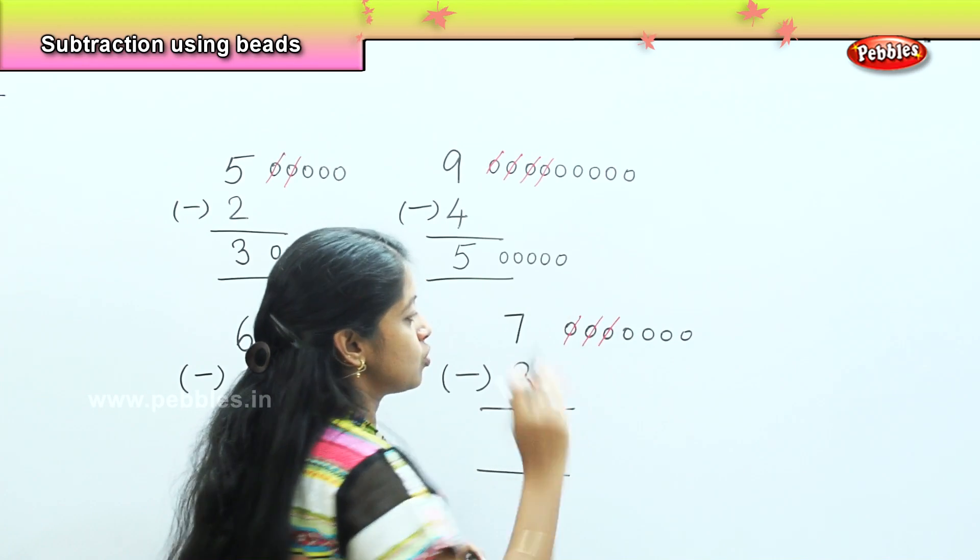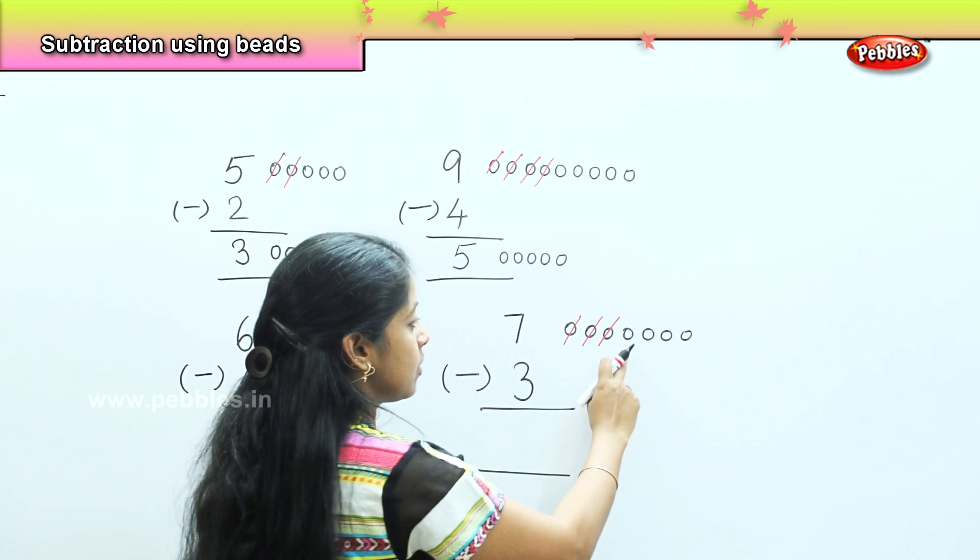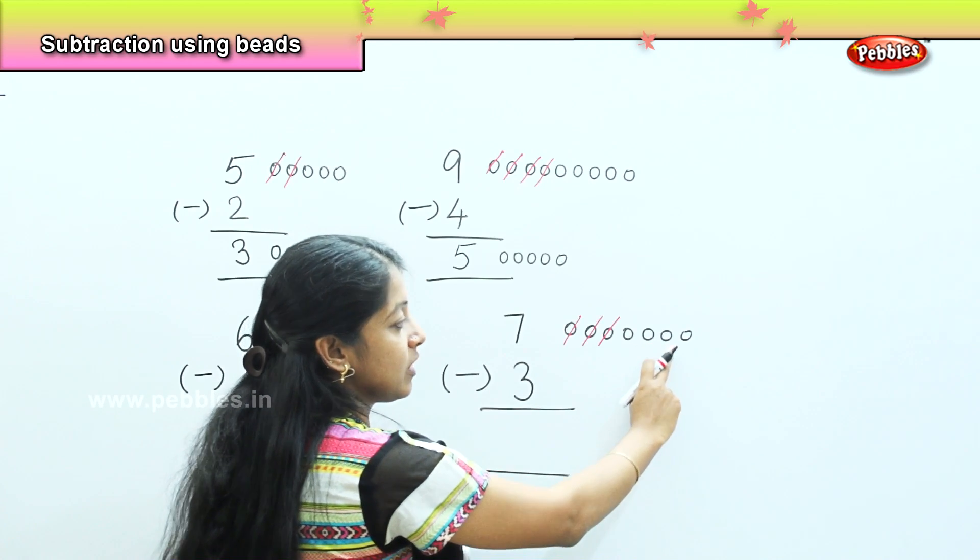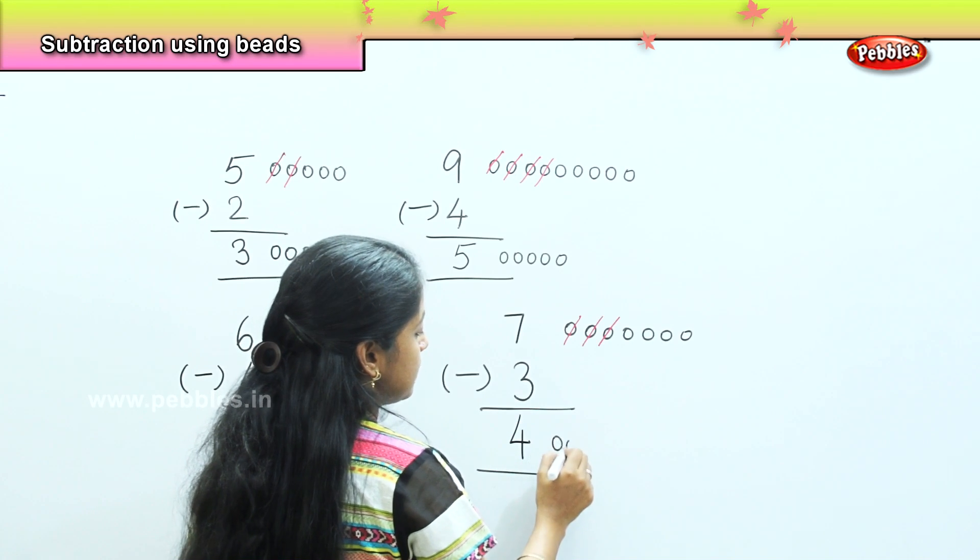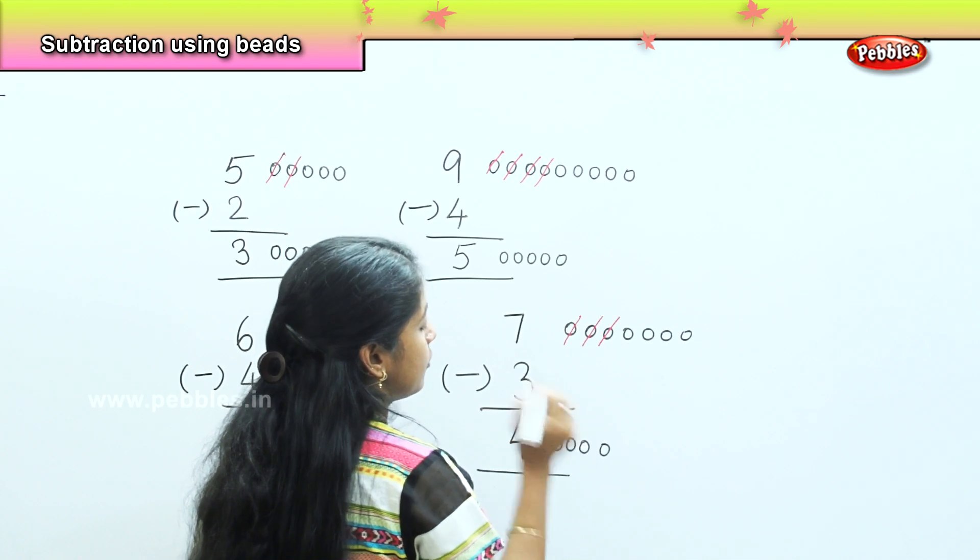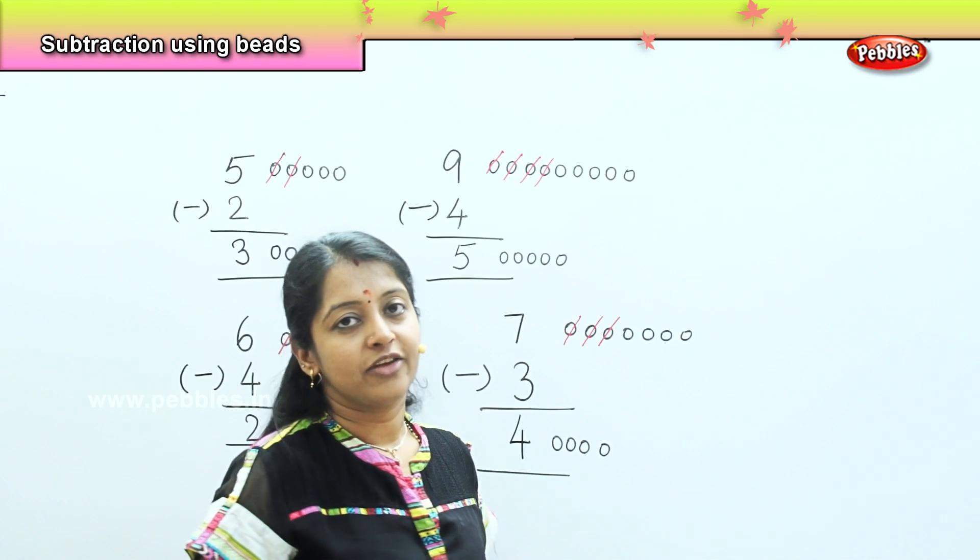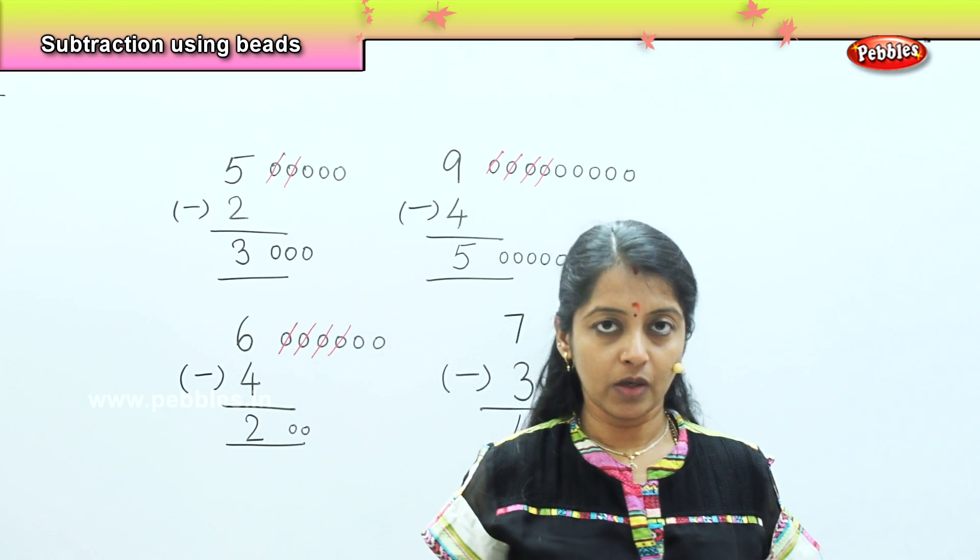1, 2, and 3. So what is the balance? 1, 2, 3, 4. So my answer is 4 and I need to draw here 4 beads. That 4 is my answer. Okay?